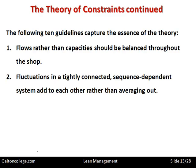Fluctuations in a tightly connected, sequence-dependent system add to each other rather than averaging out. Fluctuations may add to the complexity of the system and add to the problem. Fluctuations in demand on a production system don't necessarily average out — they simply add to the problems. The next order, coupled with the previous order, adds to the bottleneck and exacerbates the problem.